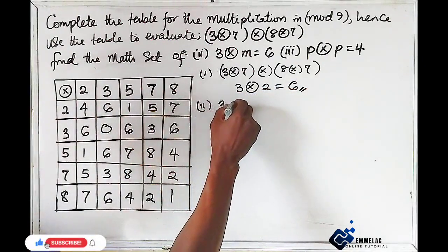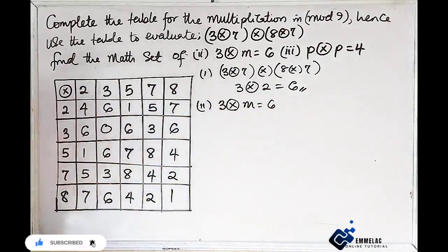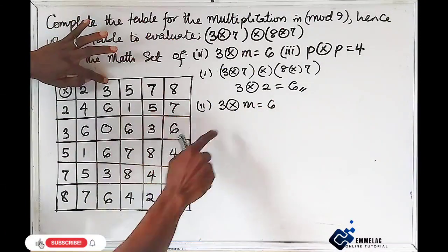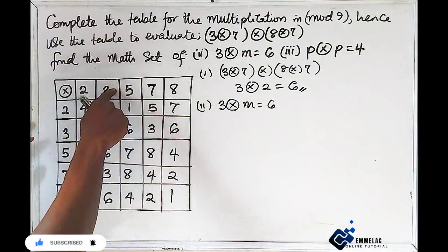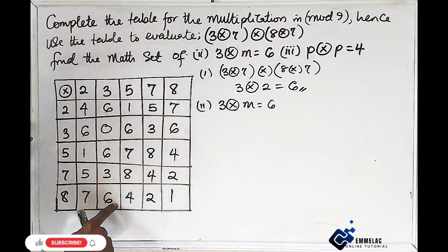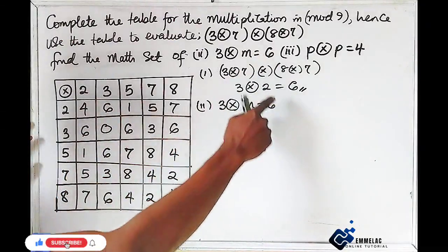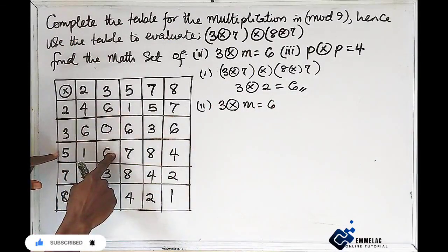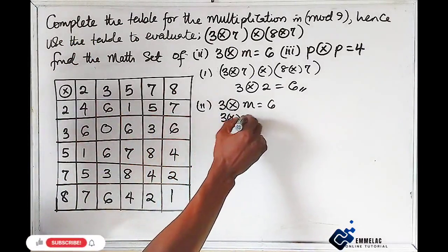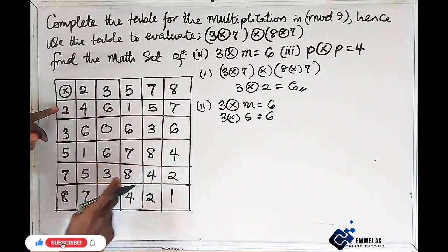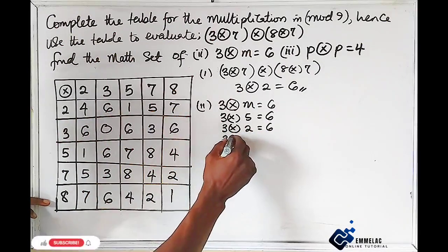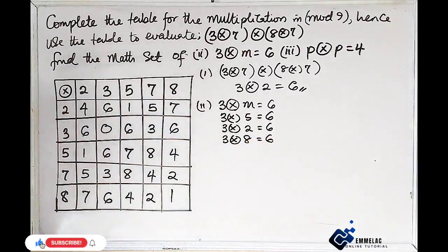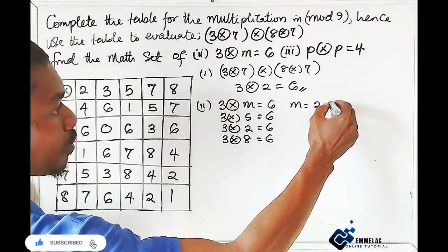For question two: find the set of m where 3×m = 6 in mod 9. Looking at the row for 3 in the table, we check which values give 6. We find that 3×5 = 6, 3×2 = 6, and 3×8 = 6. So the set of values of m is {2, 5, 8}.